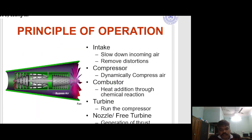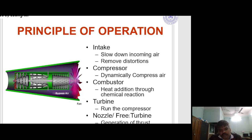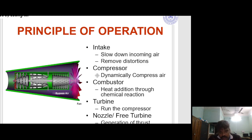Principle of operation: Intake — slow down incoming air and remove distortion. Compressor — dynamically compress air. Combustor — heat addition through chemical reaction. Turbine — runs the compressor. Nozzle or free turbine — generation of thrust, power, or shaft power. In the gas turbine figure, you can see four components. First, air enters into the compressor where pressure rises.